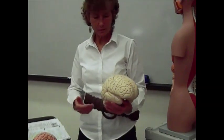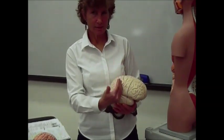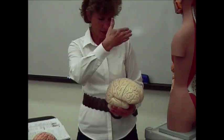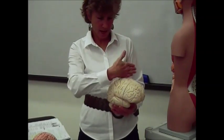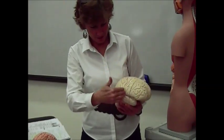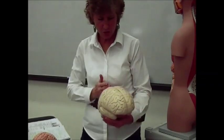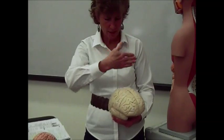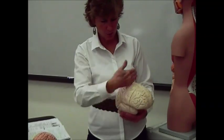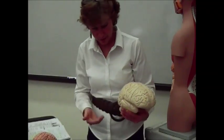The central sulcus follows the frontal or coronal plane — that's how it's cut. So you've got the longitudinal fissure going down the sagittal plane, and the central sulcus in your coronal or frontal plane.